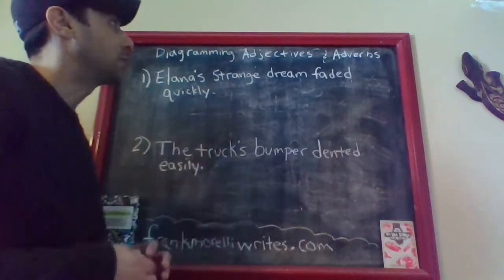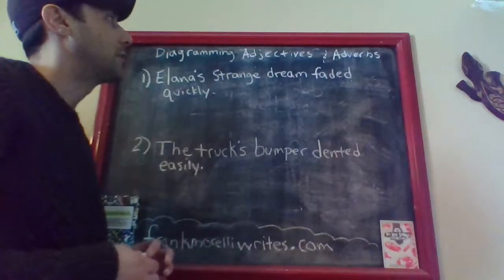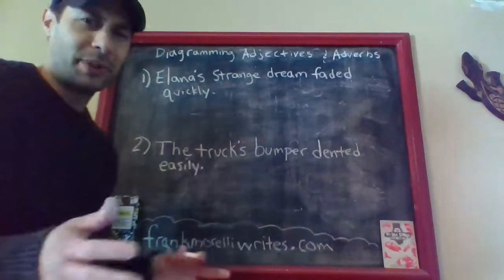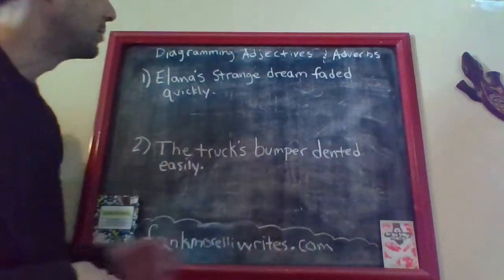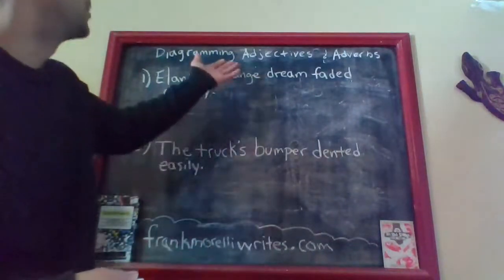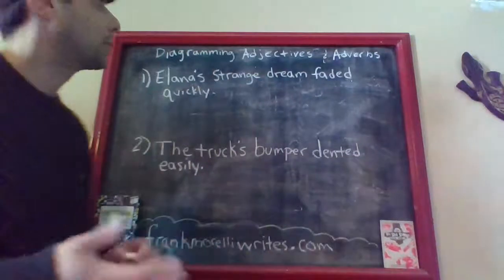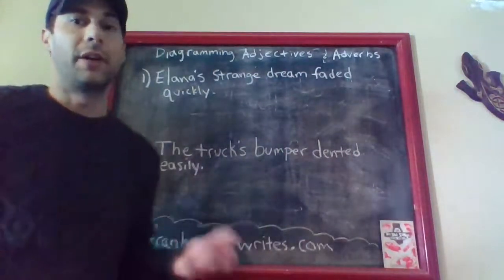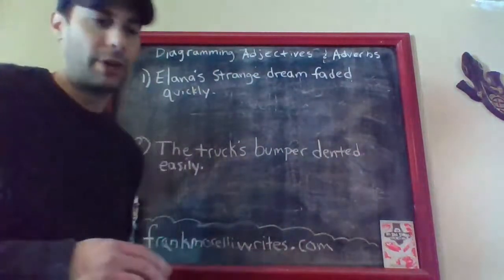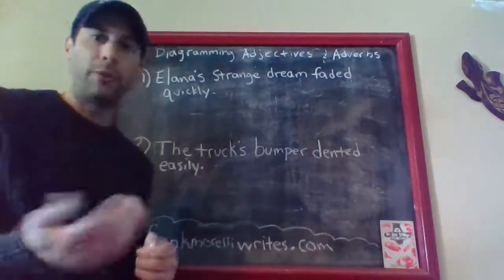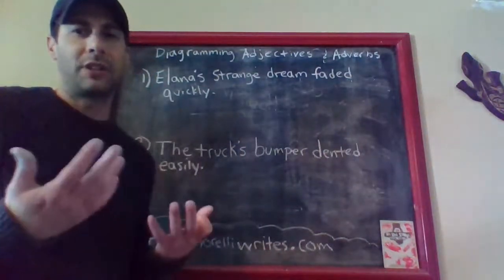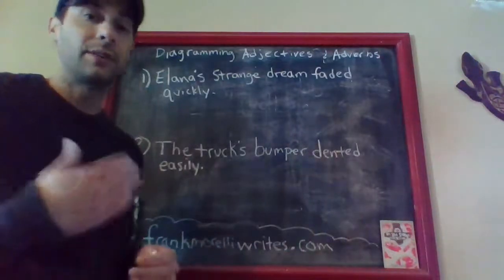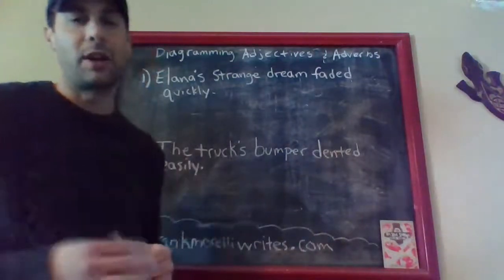If you don't know what an adjective or an adverb happen to be, you can obviously look that up because you have Google — it's a pretty interesting tool. But I'll tell you really quickly because they're easy to understand. An adjective is simply a word that tells you more information about another noun. So if I told you 'an apple' and I asked you to give me an adjective for it, one you might give me is 'red,' because it's telling us more information — 'red' would describe the apple.